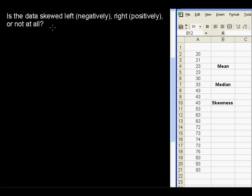Is the data skewed left, sometimes called negatively, right, or skewed positively, or is it skewed not at all?